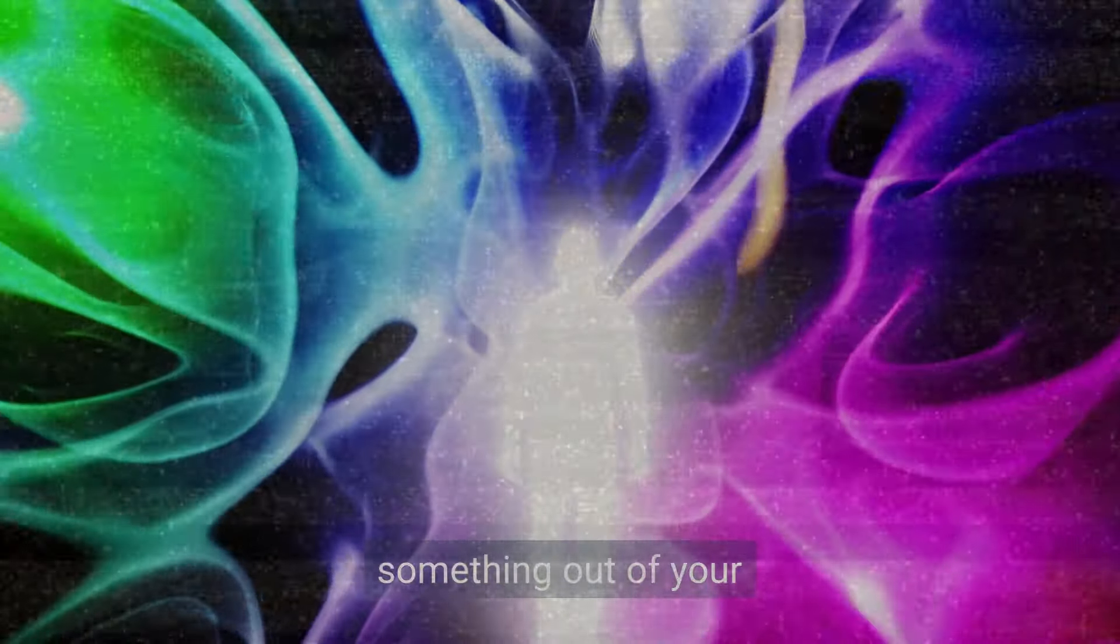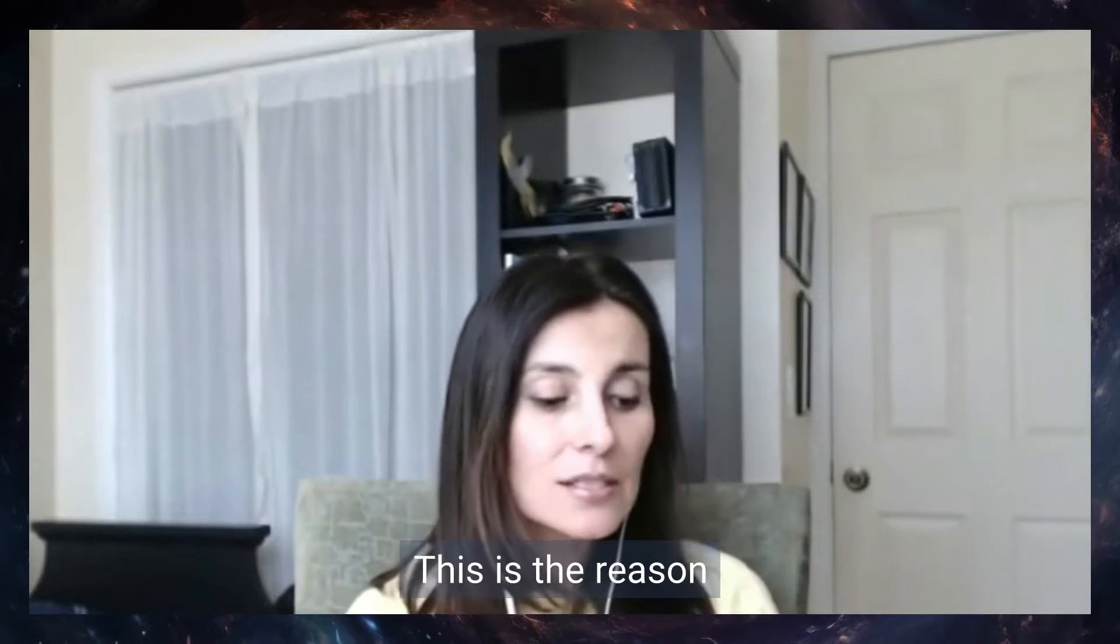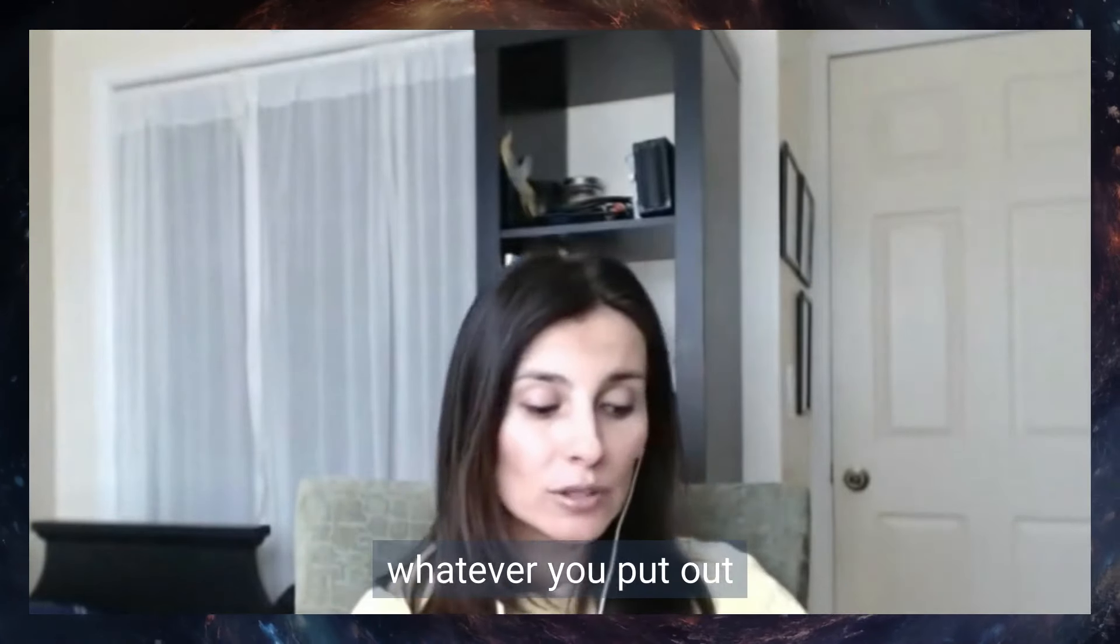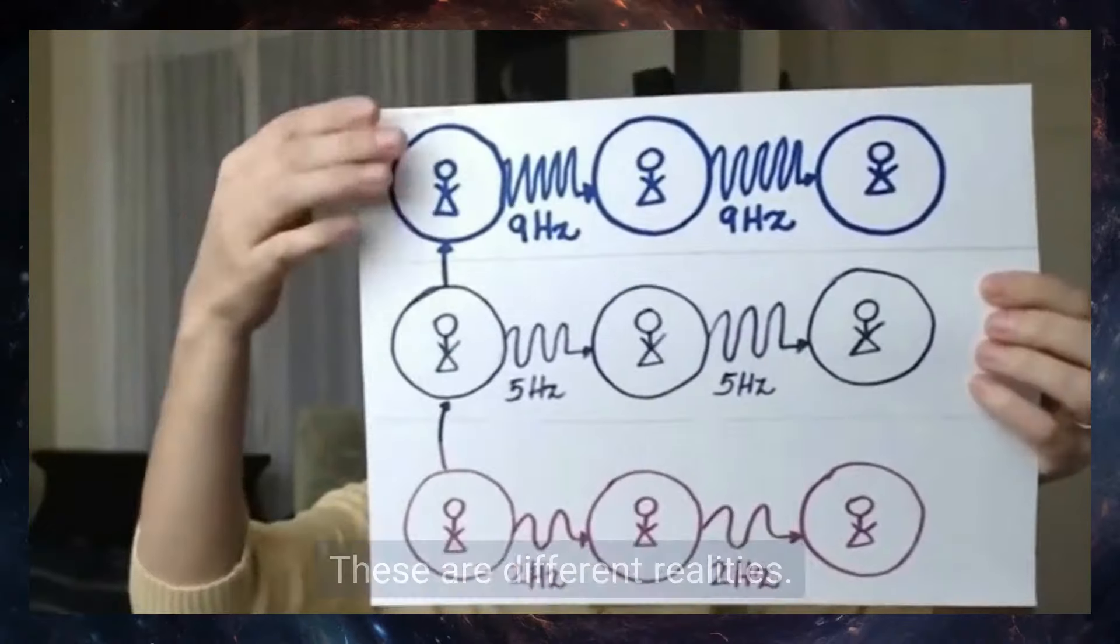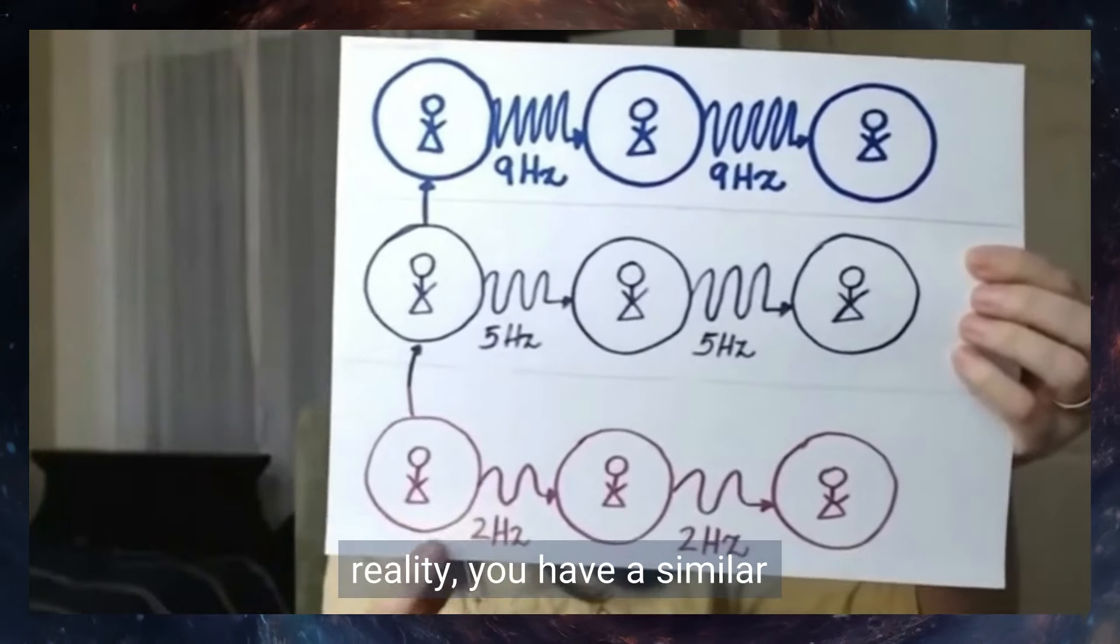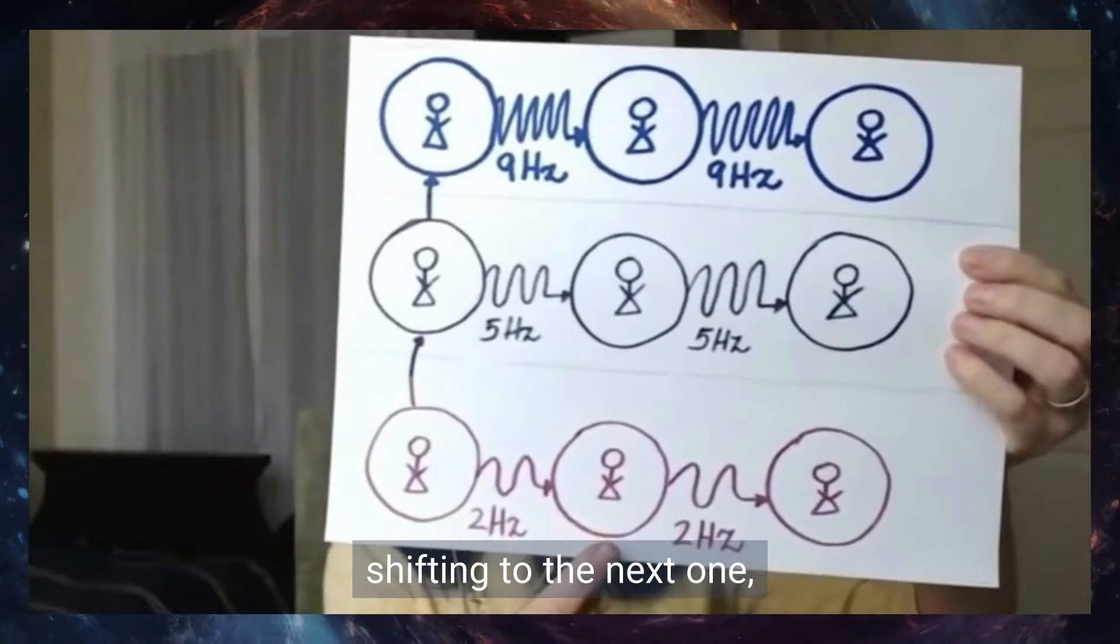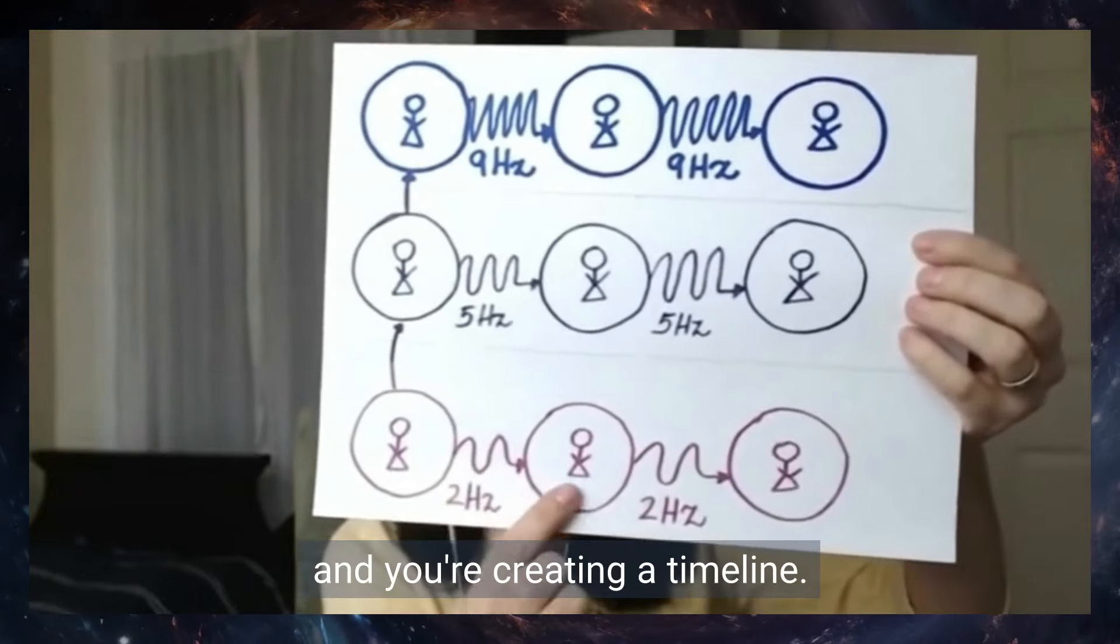When you project something out of your consciousness, you create another parallel reality. This is the reason whatever you put out is what you get back. From this reality, you have a similar frequency, you give your thoughts, emotion, and you're shifting to the next one. You're creating a timeline.